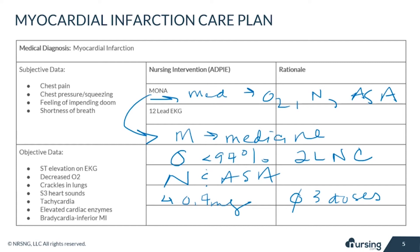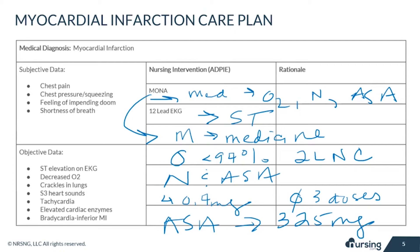Aspirin is given because it decreases mortality by thinning the patient's blood. A single dose of 325 milligrams can be given, or four baby aspirin at 81 milligrams each to total 324 milligrams. A 12-lead EKG should be completed immediately on anyone complaining of chest pain to determine if a STEMI is occurring, and if it is, this patient needs to go to the cath lab stat.